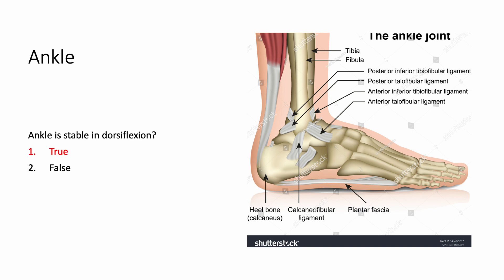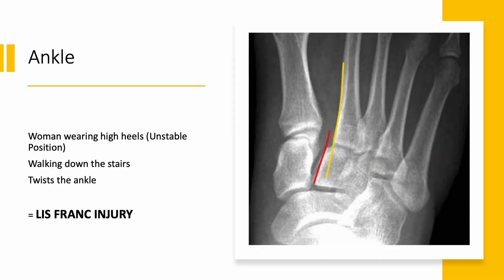What scenario could be presented while you're working? You might come across a scenario where a woman was wearing high heels — that's an unstable position because the ankle joint is stable in dorsiflexion — so she's wearing high heels, putting her ankle in plantar flexion, walking down the stairs, and then she twists her ankle. What do we get? We get an injury called a Lisfranc injury. This is an unstable injury. If you look at that X-ray, there's a widening gap between the first and second metatarsal, so Lisfranc injuries need to be referred to orthopedic surgeons.